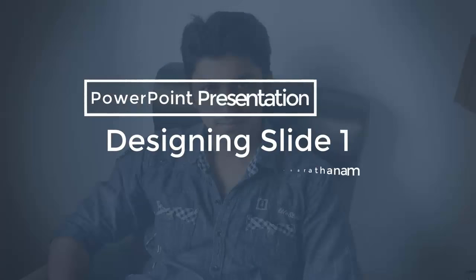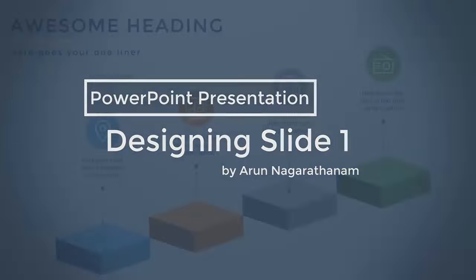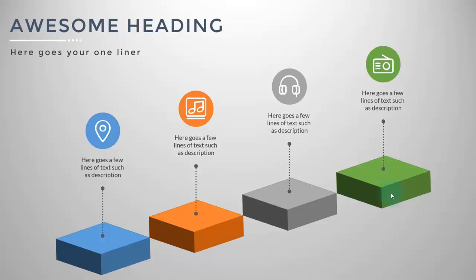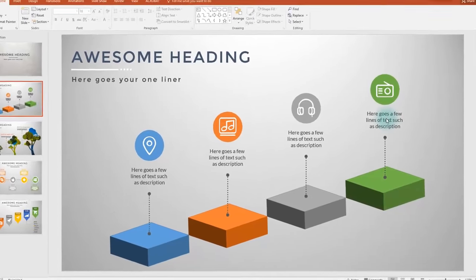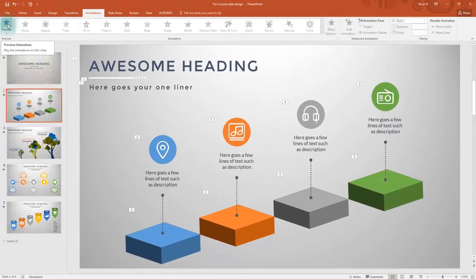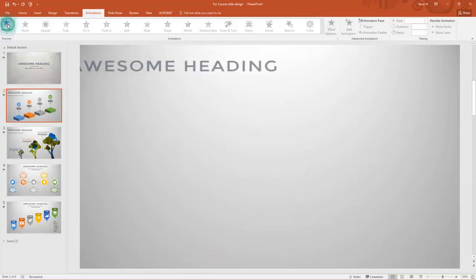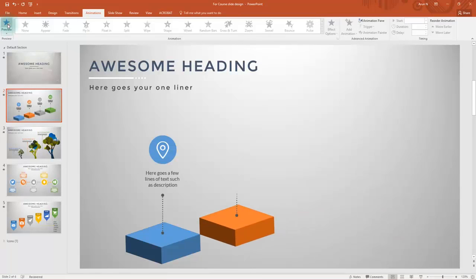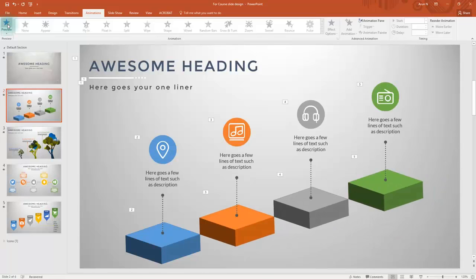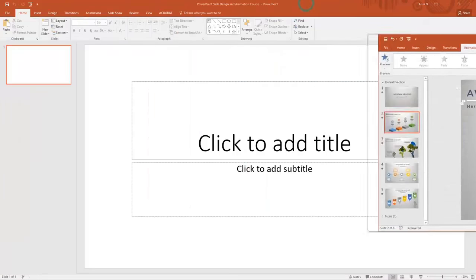In this video we are going to design slide 1 of this PowerPoint presentation. You can see there are 4 square boxes in 3D format with a depth dimension, in 4 different colors. There are 4 different icons surrounded by a solid fill colored circle and a few lines of description for each of them. Before diving into the design and animation of this slide, let's have a mini preview. Now let's jump into the designing process first, and then we can move into the animation.